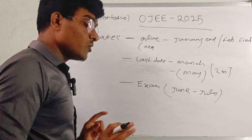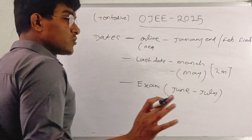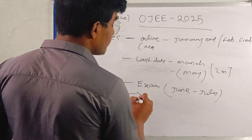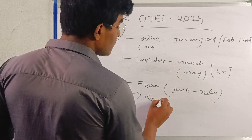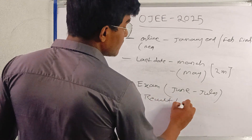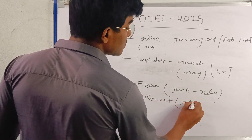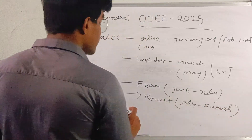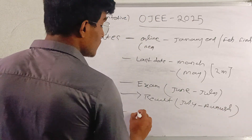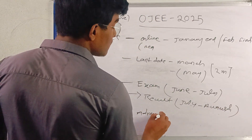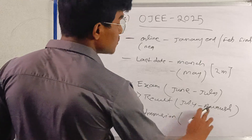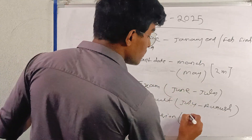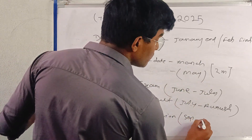The exam will be complete around June and July, with results declared in June or July month. Results will also be declared July to August. Then college admissions will follow in September to October.